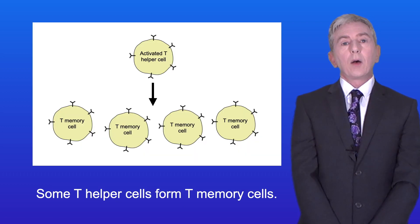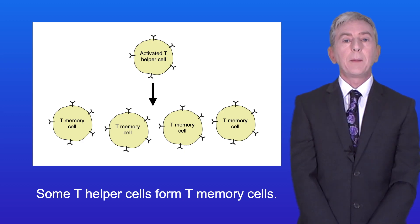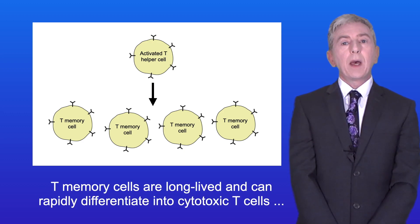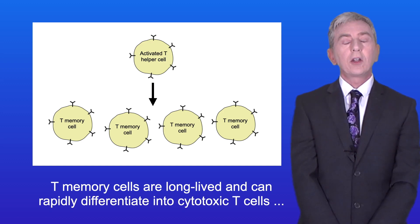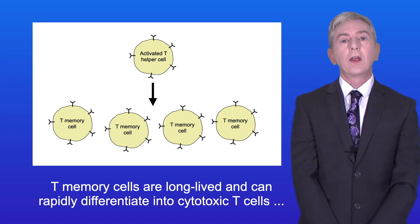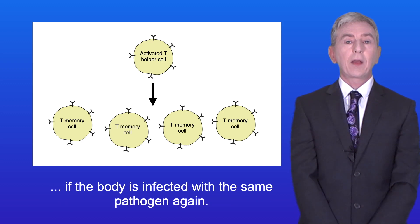Some T helper cells form T memory cells. T memory cells are long-lived and can rapidly differentiate into cytotoxic T cells if the body is infected with the same pathogen again.